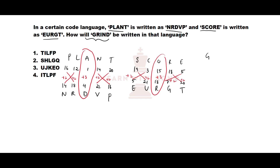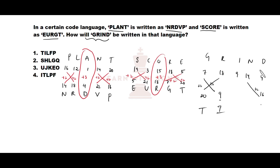Now let us find the code for GRIND: G R I N D. G=7, R=18, I=9, N=14, D=4. Adding plus 2: G becomes 9 = I, R becomes 20 = T, N becomes 16 = P, D becomes 6 = F. For the middle letter I=9, adding plus 3 gives 12 = L. So the coded form is I T L F P — wait, arranging in order: the answer is TILFP, which is option number 1.